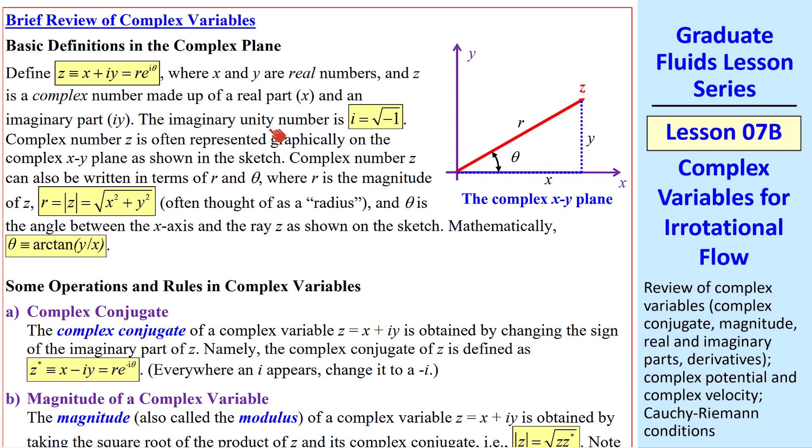i itself is the square root of negative 1, the imaginary unity number. We usually represent z on an xy plane with some value of x and some value of y, but y is the coordinate corresponding to the imaginary part. r is the magnitude of z, which from simple geometry is the square root of x squared plus y squared. And theta is this angle given by the arctangent.